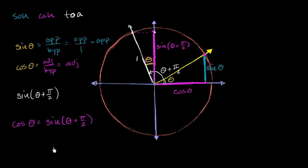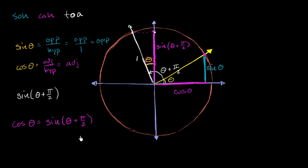So that was pretty neat. Just like that, we were able to come up with a pretty neat relationship: the cosine of theta is equal to sine of theta plus pi over 2, or equivalently, sine of theta plus pi over 2 is equal to cosine of theta. After this video, I encourage you to explore further — think about what cosine of theta plus pi over 2 might relate to.